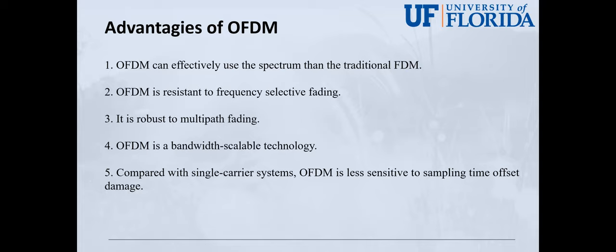Because OFDM uses a cyclic prefix to eliminate ISI in the multipath channel environment, it is robust to multipath fading. OFDM is also a bandwidth scalable technology because bandwidth can be allocated according to resource requirement. Compared with single carrier systems, OFDM is less sensitive to sampling time offset damage.